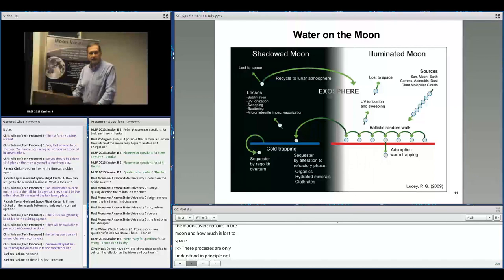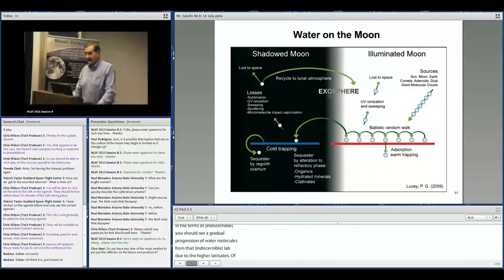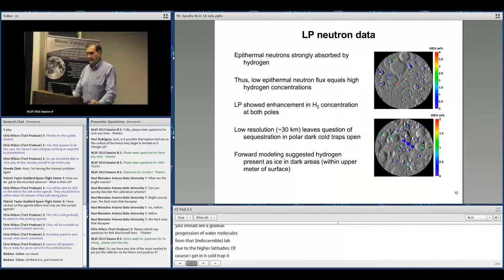This cartoon from Paul shows processes where water is constantly added to the Moon through impact and solar wind interaction. That water isn't static—it's in motion, trying to move to areas where it's more stable. Cooler is more stable, so there's a gradual progression from lower to higher latitudes. If it gets into a cold trap, it's there forever.